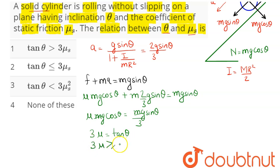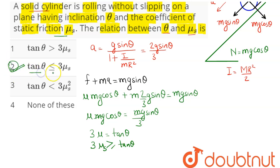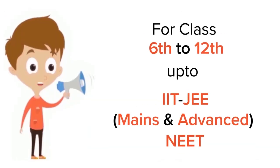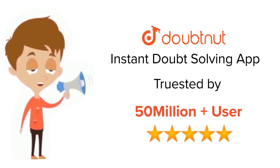Therefore, 3 mu must be greater than or equal to tan theta, where mu is the static friction coefficient mu s. So 3 mu s must be greater than or equal to tan theta. Option number 2, that is tan theta less than or equal to 3 mu s, is the correct answer.